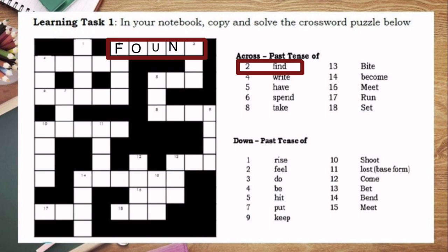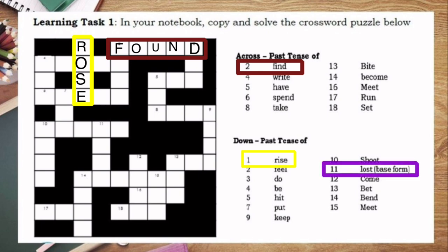The past tense of 'find' is 'found' — F-O-U-N-D. For the down section, the past tense of 'rise' is 'rose' — R-O-S-E. You just need to be familiar with all the past tense forms of those verbs. Note that number 11 shows 'lost' with an open-close parenthesis labeled 'base form,' so you need to identify the base form of the past tense 'lost' — meaning, what is the present tense of 'lost'?